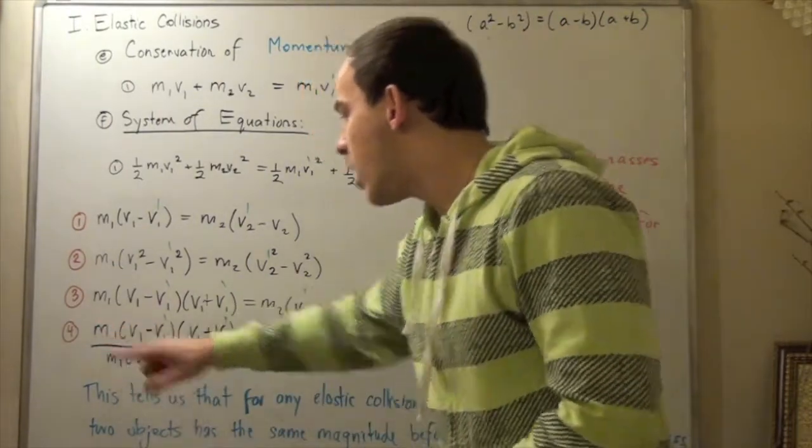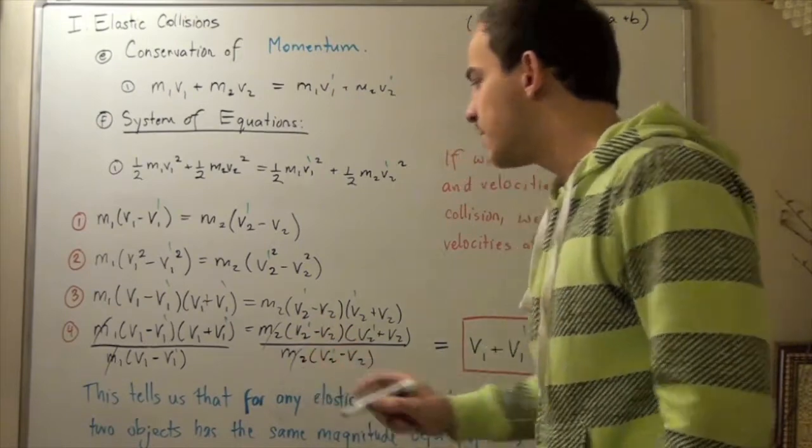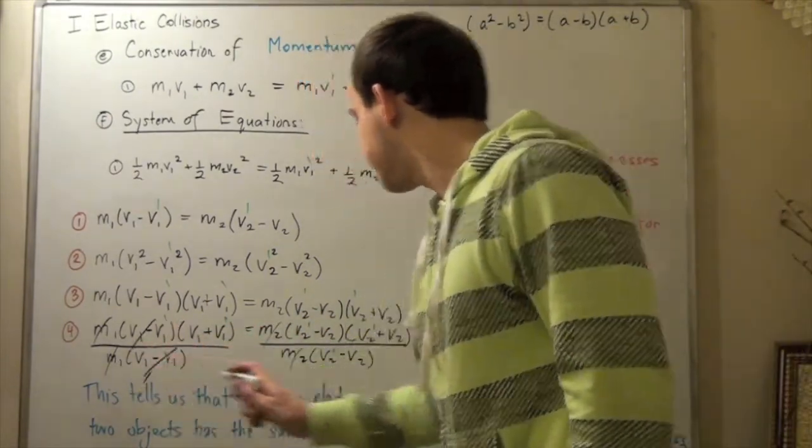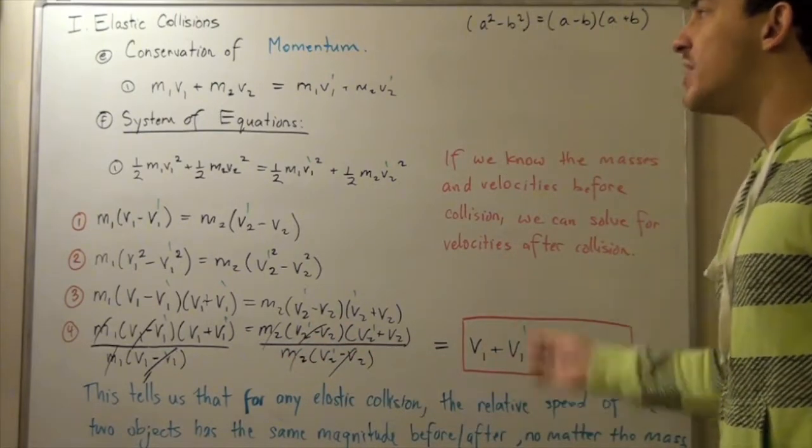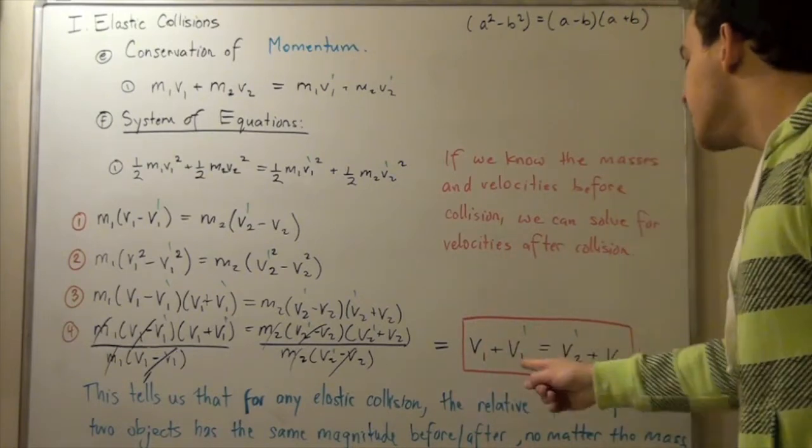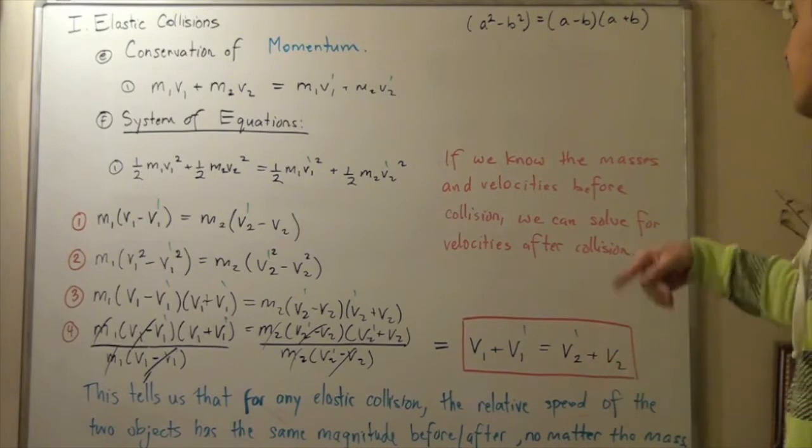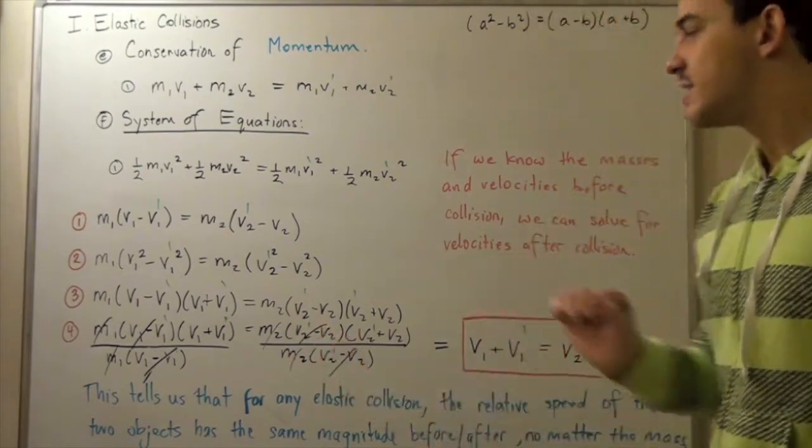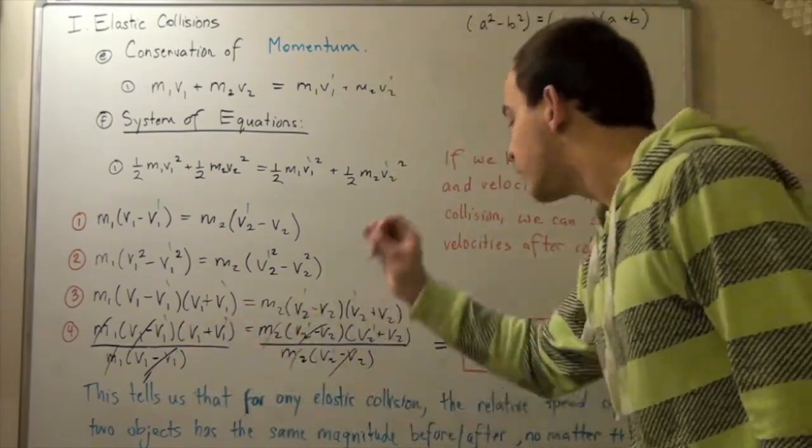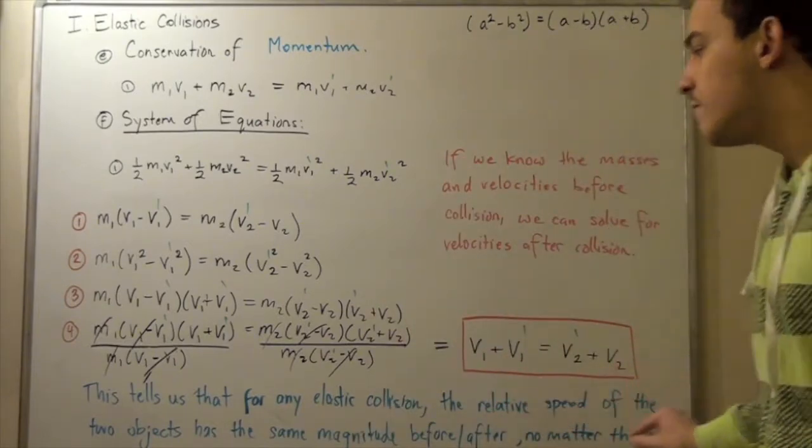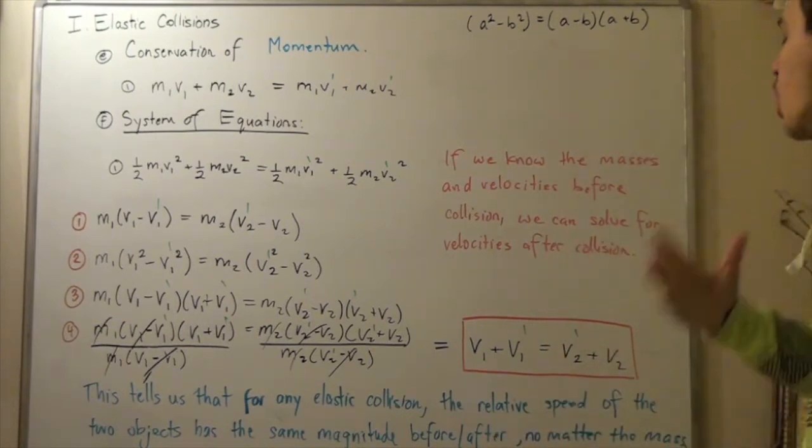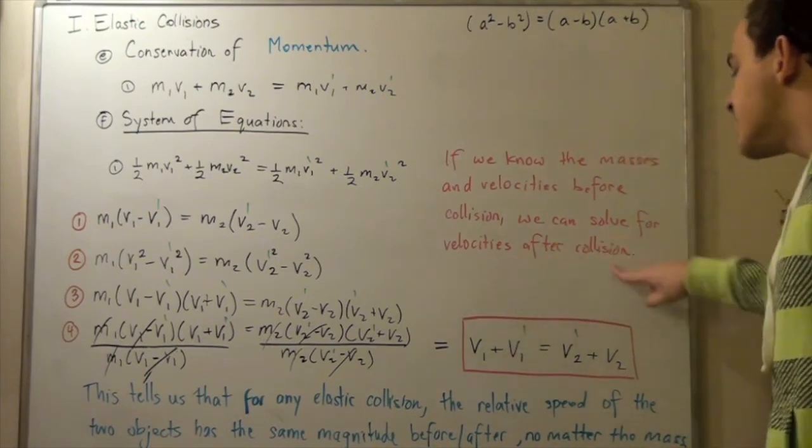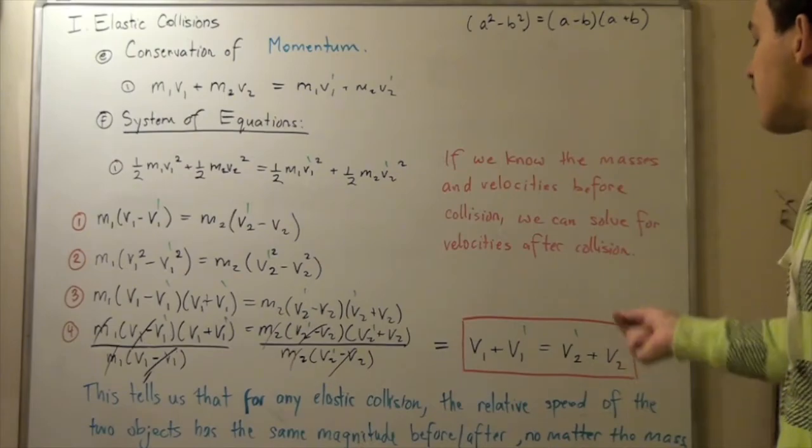We are left with v₁ + v₁' equals v₂' + v₂. What this tells us is the following: for any elastic collision, the relative speed of the two objects has the same magnitude before as after the collision, no matter what the masses are. We could use this equation to basically solve for our final velocity.